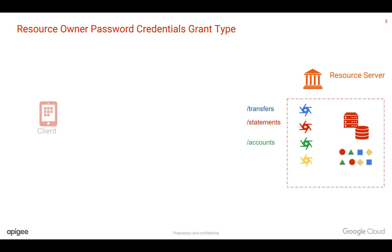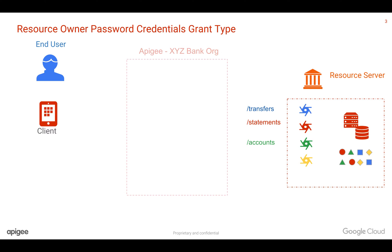Let's say there is a client, which is a mobile application, trying to access information like account statements. The end user who actually owns the data — like a bank customer who has a bank account and does all the transactions — when the client mobile application tries to access a particular API, it needs the end user's consent before it can access this API.